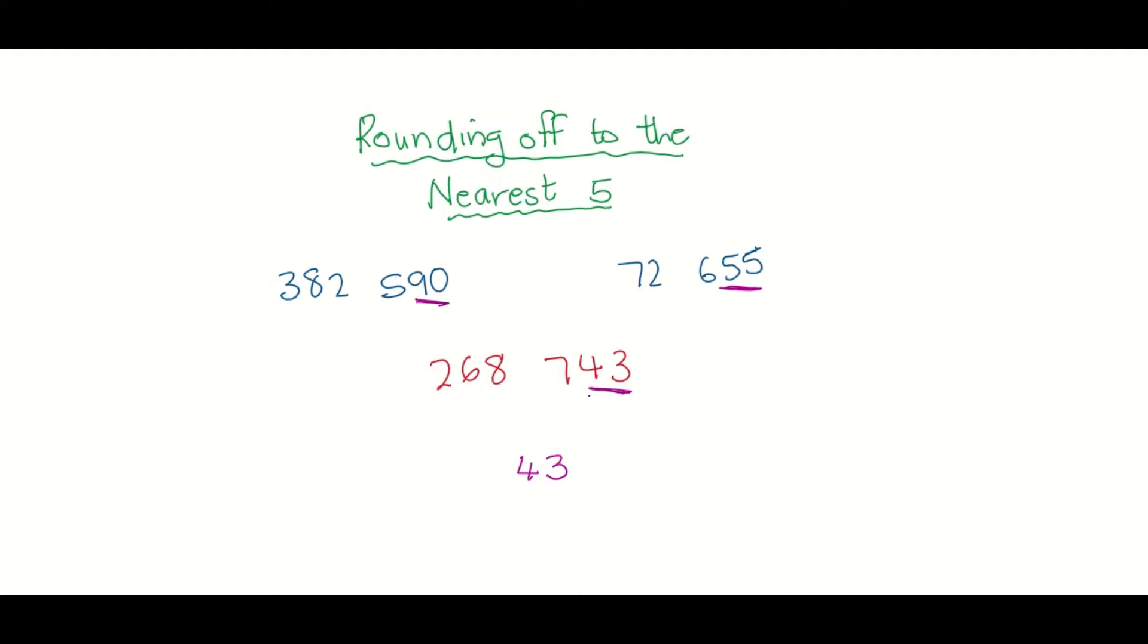Then find the multiple of five that comes before 43 and write that down, that would be 40, and the multiple of five after 43. Remember we're working with 43. The multiple of five after 43 would be 45.